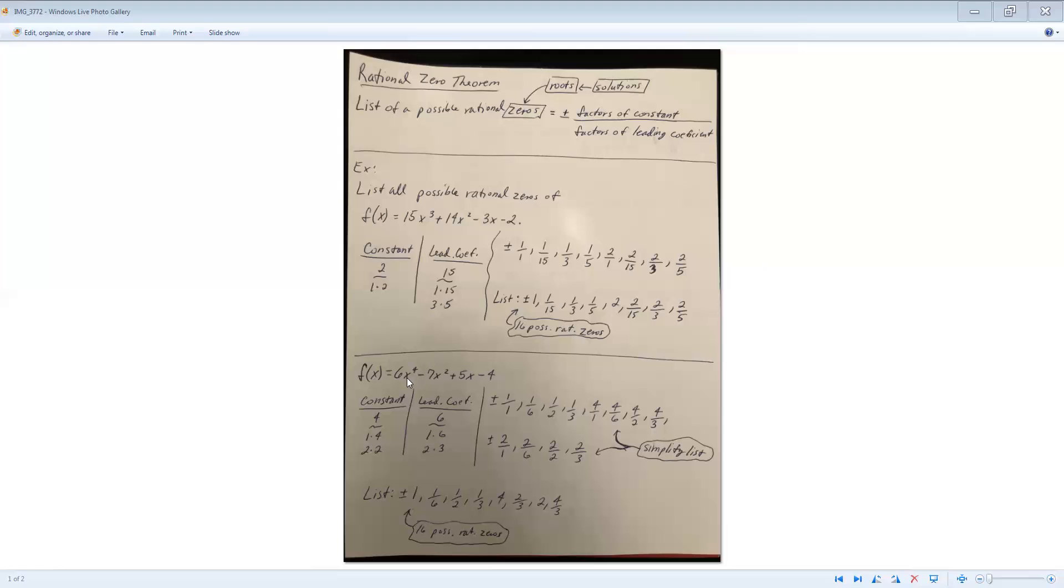Don't forget the highest degree of your exponent lets you know how many solutions that there are possibly. So here I should have 4 solutions, even if I have repeated solutions. And then in this top one I should have 3 solutions, even if there are some repeated solutions.